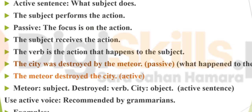In an active sentence you can see what the subject does — the subject performs the action. In passive, the focus is on the action being acted upon, and the subject receives the action at the end. The verb is the action that happens to the subject; the verb is basically the action being acted upon the subject.